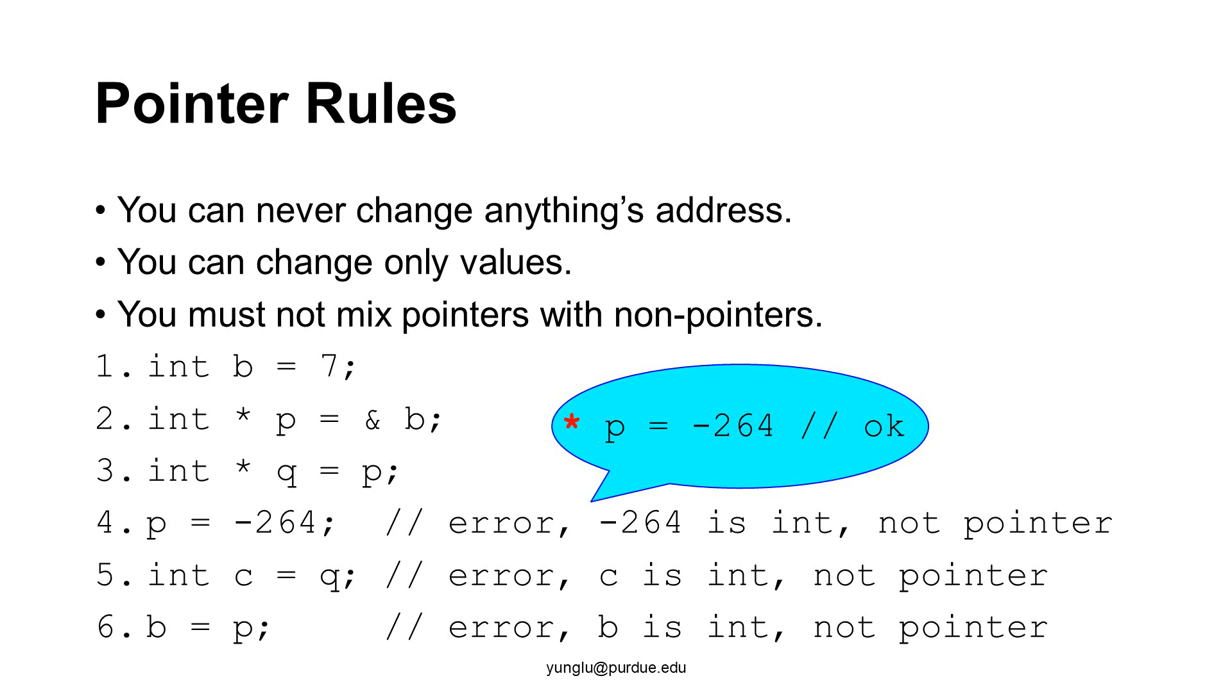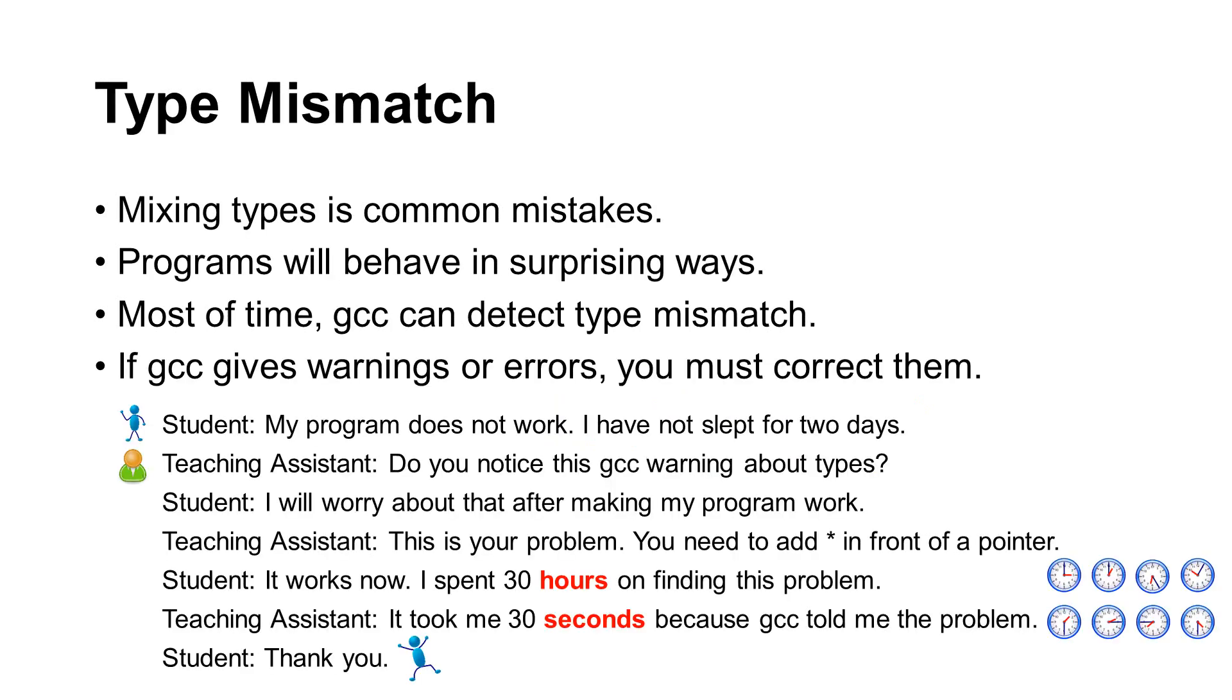Mixing types is a common mistake. Please understand the type rules explained in this lecture. If you mix types, your programs usually cannot pass compilation and cannot run at all. In some cases, you can get an executable file but the program's behavior would be wrong. In most cases, GCC can detect the problems when you mix types. When this occurs, you must correct the errors. If you ignore what GCC tells you, your program will not work.